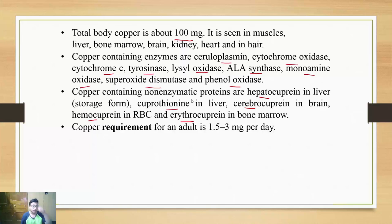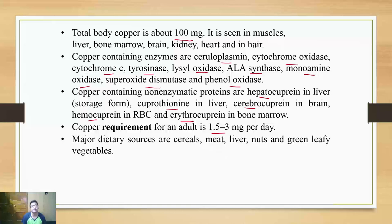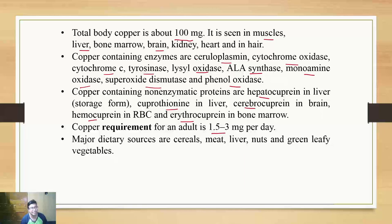The requirement of copper is around one and a half to three mg per day. Most minerals are available from leafy vegetables, and since copper is present in muscle and liver, bone marrow and muscles, animal sources such as meat and chicken provide copper. Non-vegans will get copper from those sources.